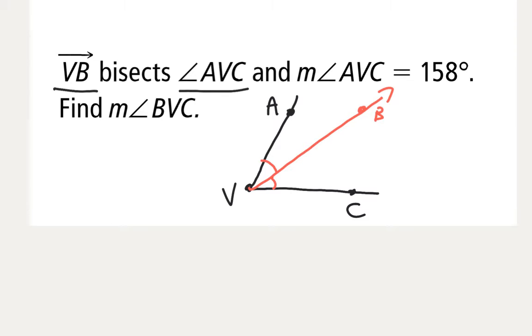So next, let's see, we've got the measure of angle AVC is 158, so the big angle is 158. So the measure of angle BVC, and that is BVC, just this half of it, right? Because they're two congruent halves, equals 158 divided by 2.